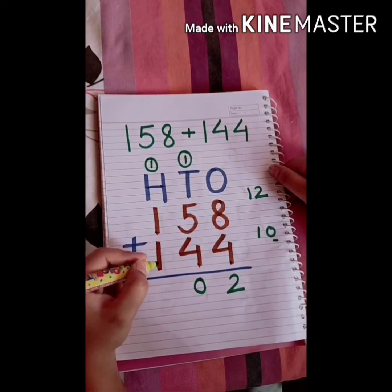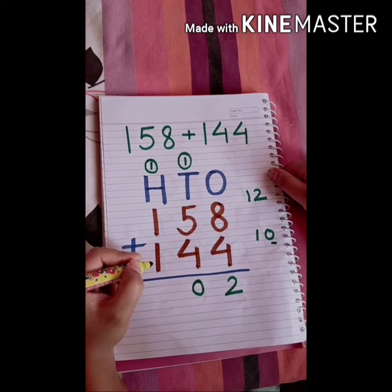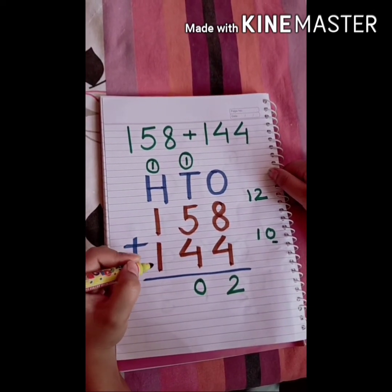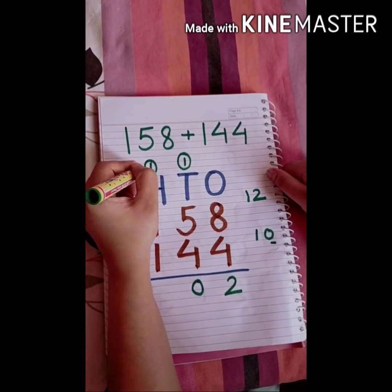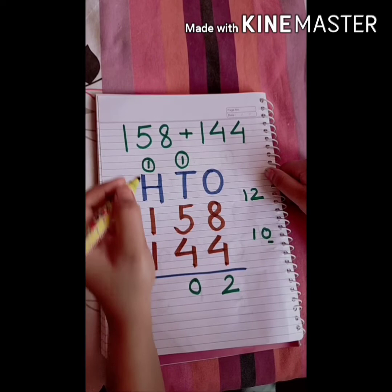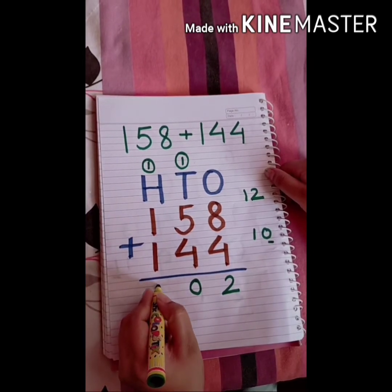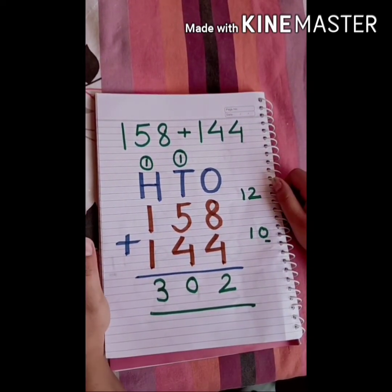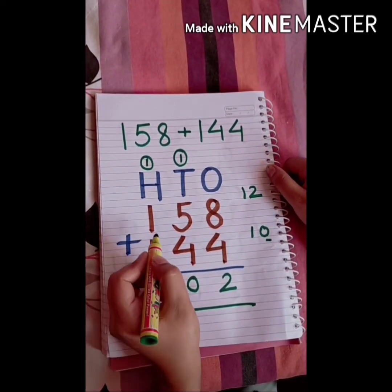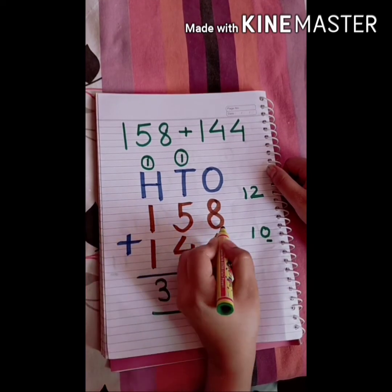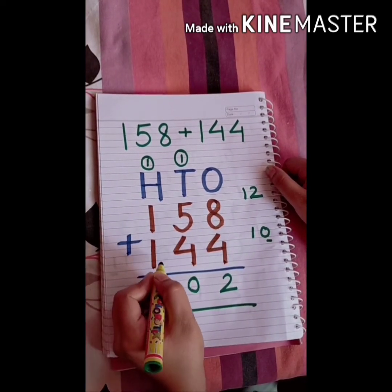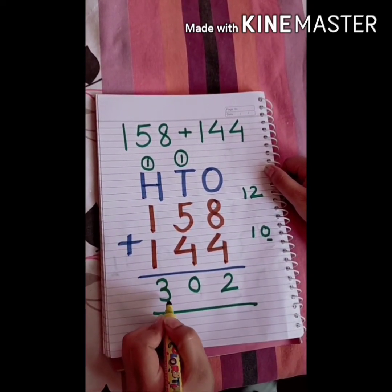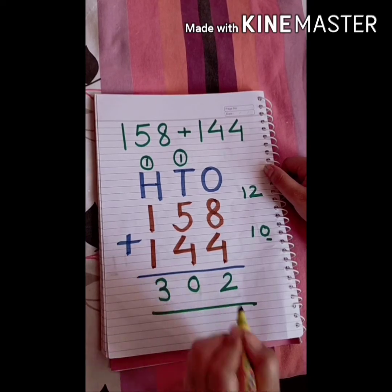Now add the hundreds: 1 plus 1 equals 2, and 2 plus the carry of 1 equals 3. So when we add 158 and 144, we get 302.